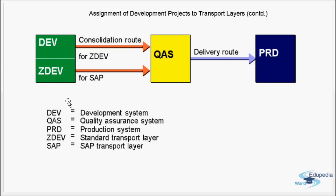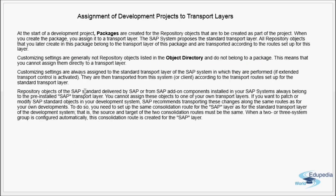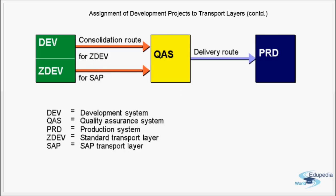Exclusively SAP objects go through the SAP transport layer. All other objects — modifications to SAP objects, your own developments and enhancements, and customizing — move through the standard transport layer. So we have two types of transport layers: standard and SAP. When you implement the system and set up transport routes, you set up these two layers. Both layers have the same source — the development box — and the same target — the quality system. This is the assignment of development projects to transport layers.